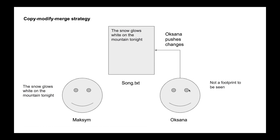After that, Oxana tries to push her changes to the server. But she started from the empty file, while the server already has Maxim's changes. When she tries to push, there is a conflict because she started from version zero but on the server there is already version one — the version Maxim committed.